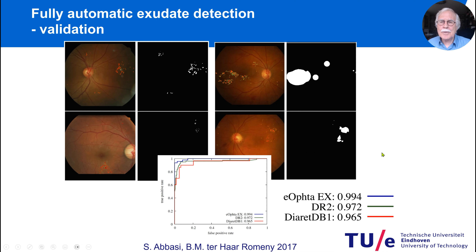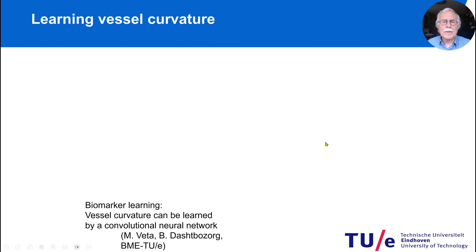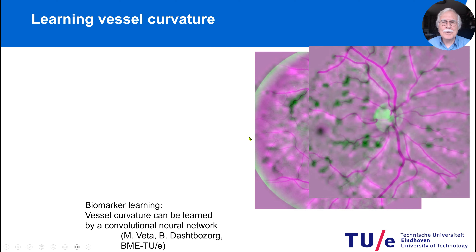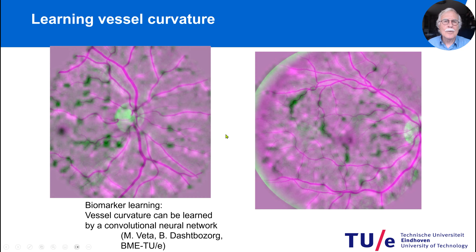Looking at the performance, we tested on many public databases: EOFTA, DR2, and Diabet-DB1, and the performance of the network was really high. We could even train the system to show us areas where curvature is high. Learning the network to visualize curved blood vessels was a nice finding from our neural networks.